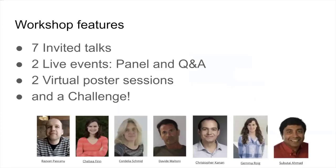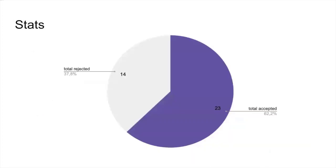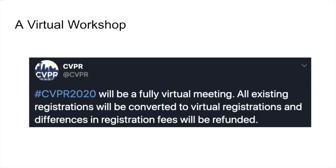We achieved seven invited talks, two live events with a panel and a Q&A session, two virtual poster sessions, and a challenge. To give you some stats about the papers, we were overwhelmed by the amount of submissions, and we were impressed by the quality of them. Sadly, we had to reject 14 papers to keep the workshop within limits. Finding reviewers was also challenging — many of them declined due to COVID, and we had to resort to emergency ones. I believe that COVID and CVPR 2020 going virtual have put additional difficulty in the organization of this workshop, not only for the organization, but for the authors and the speakers.